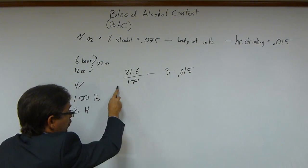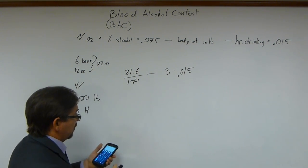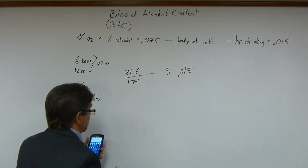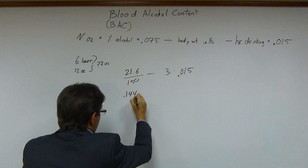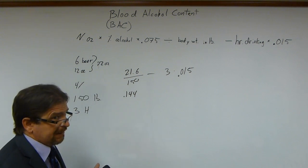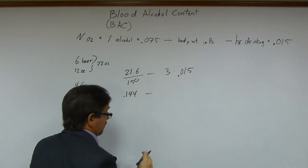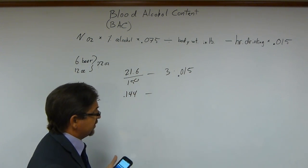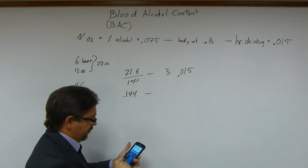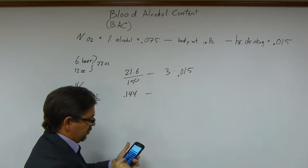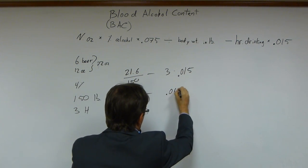21.6 divided by 150 gives us 0.144. That's going to be a big number — probably a deadly number. I'd have to check what the safe limit is. Then 3 times 0.015 gives us 0.045.